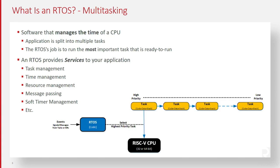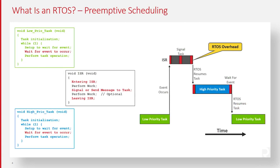Most RTOSs are called preemptive schedulers. What that means is that if a low-priority task is currently executing and an interrupt comes in, the interrupt service routine gets to execute assuming interrupts are enabled. At that point, the interrupt service routine takes over the CPU and the ISR executes.